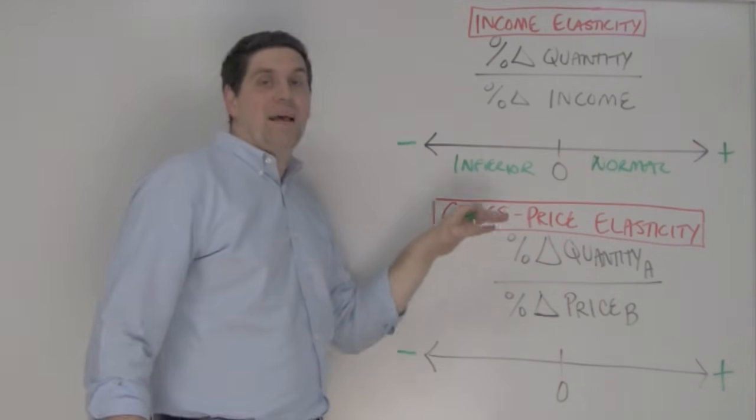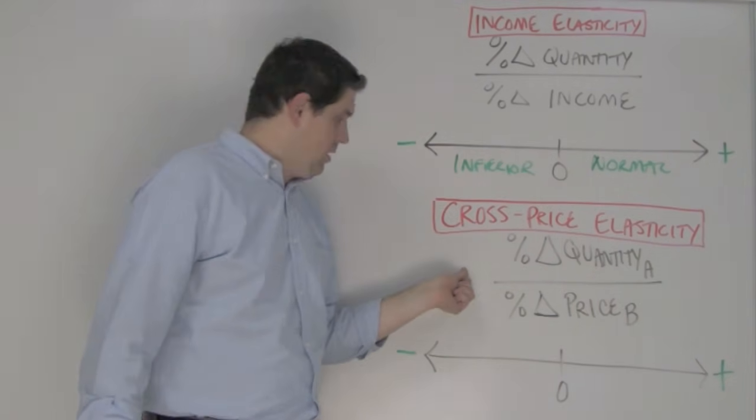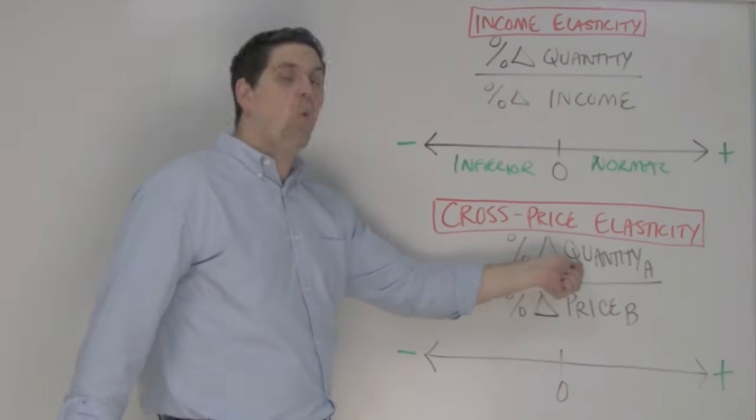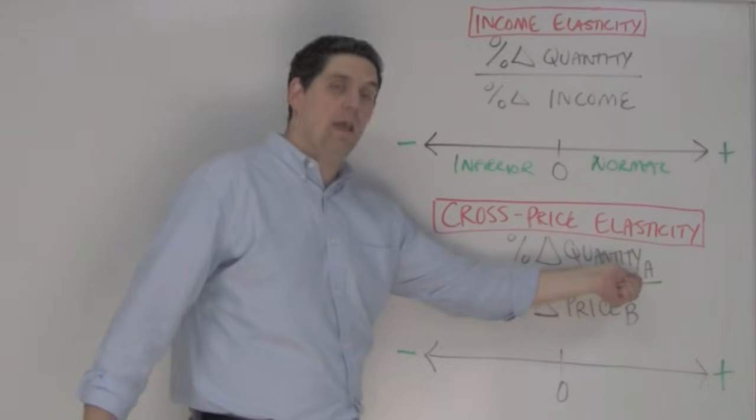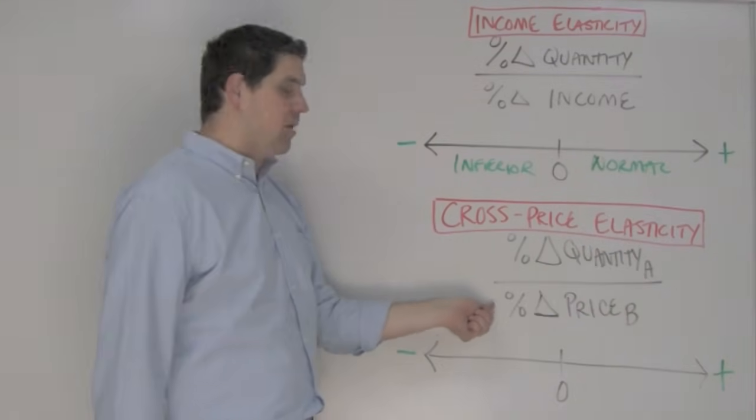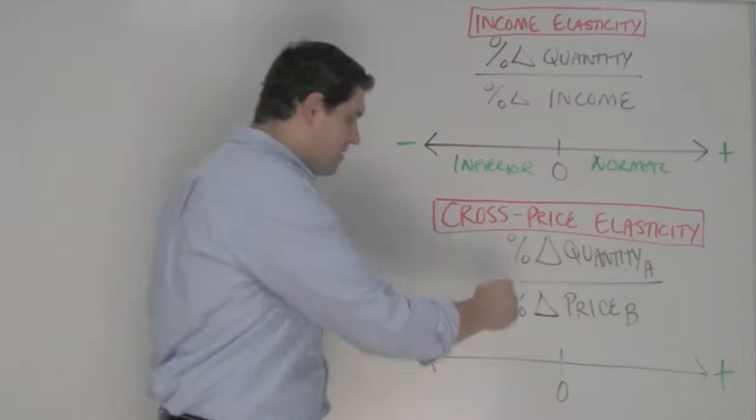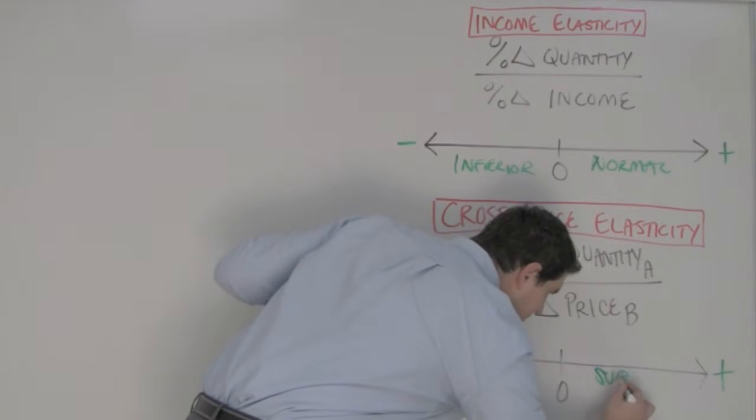For the cross price elasticity coefficient, you're using this equation. It's the percent change in the price of product B and how it affects the percent change in the quantity of a different product, product A. Now, if the price goes up for product B and people buy more of product A, that means that this must be a positive number. A positive number means that these are substitutes.